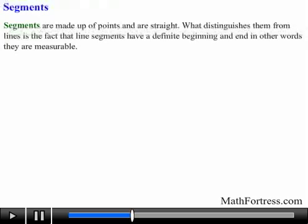Like lines, segments are made up of points and are straight. What distinguishes them from lines is the fact that line segments have a definite beginning and end. In other words, they are measurable. They do not extend forever and ever in both directions like lines do.